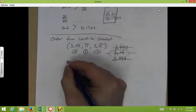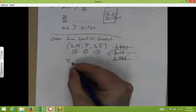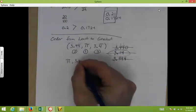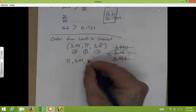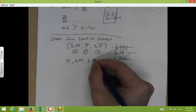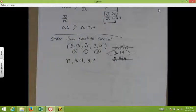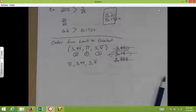So, the correct order from least to greatest is going to be pi, then 3.44, then 3.4 with bar notation. And that is how you order rational numbers. And that's how you compare and order them.